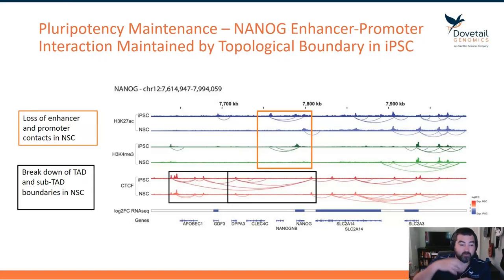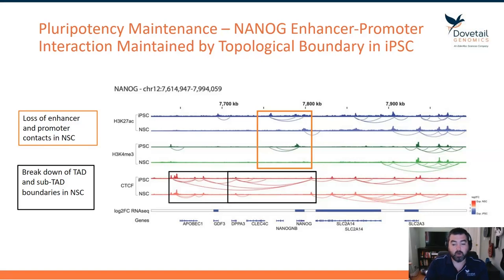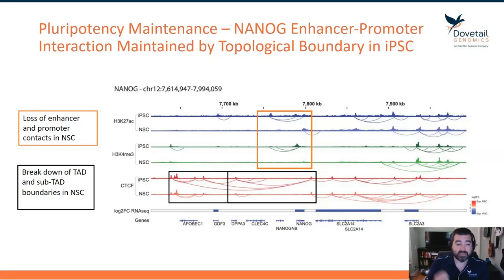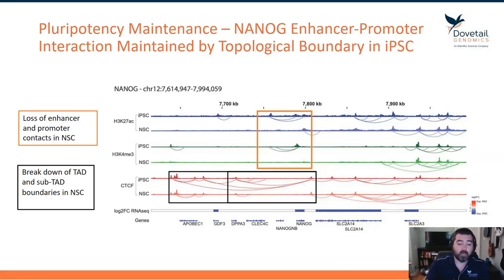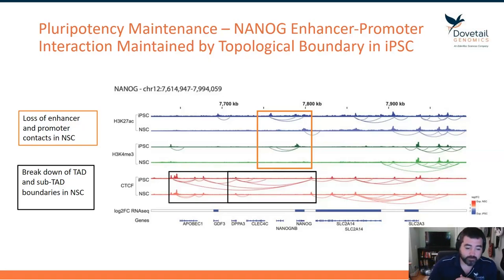There are sub-TAD boundaries or sub-loops where those interactions are being lost. If you remember the contact matrix showing those interactions obliterated, we now have confirmation through the CTCF viewpoint of that. We also have a very powerful data type that tells us exactly what enhancer is engaged with what promoter to turn NANOG on.